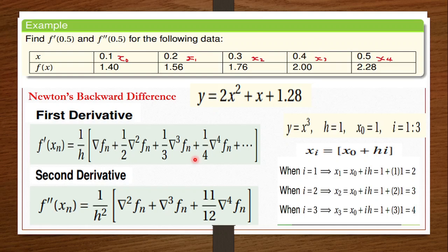Just as we did with the forward difference in the previous video, we are going to draw a table to find the variables that appear in the equation. Once we have those values from the table, we input them into the formula to compute the derivatives at 0.5.